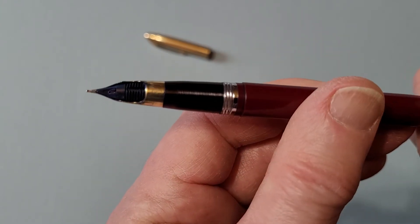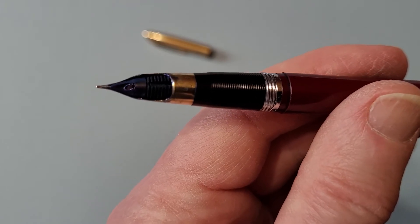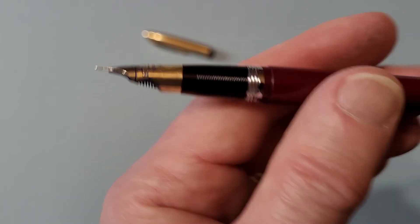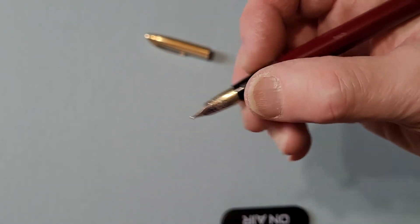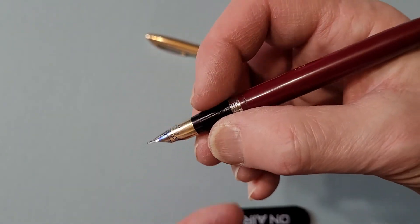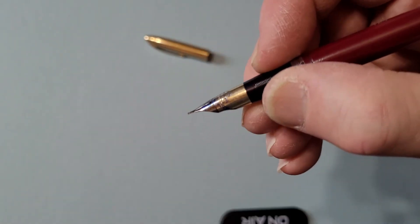And there's the breather hole and you can't really see the snorkel when you're writing with the pen. It has a good size section there, and it's textured, so it's not too slippery.